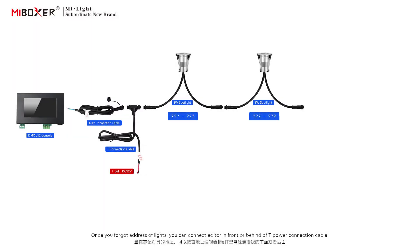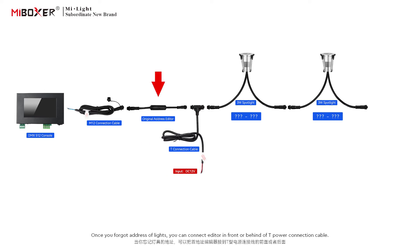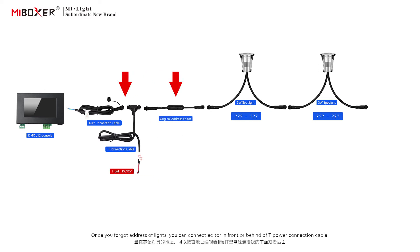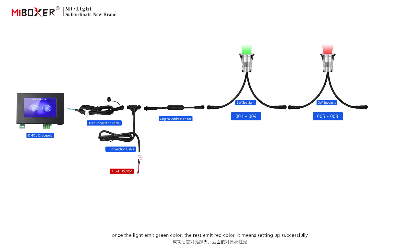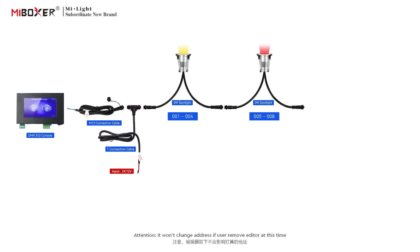If you forget the address of the lights, you can connect the editor in front of or behind the T power connection cable. After the console is turned on and the lamps are powered on, the editor will set the original address of the first light as one. Once the first light emits green color and the rest emit red color, it means the setup was successful. Note: removing the editor at this point will not change the address.